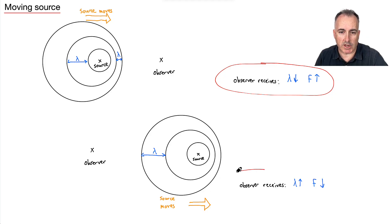These are the two different situations where if the source is moving towards the observer, or if the source is moving away from the observer. That's what's really important here. This can work for sound, but it also works for light. This is the same regardless.